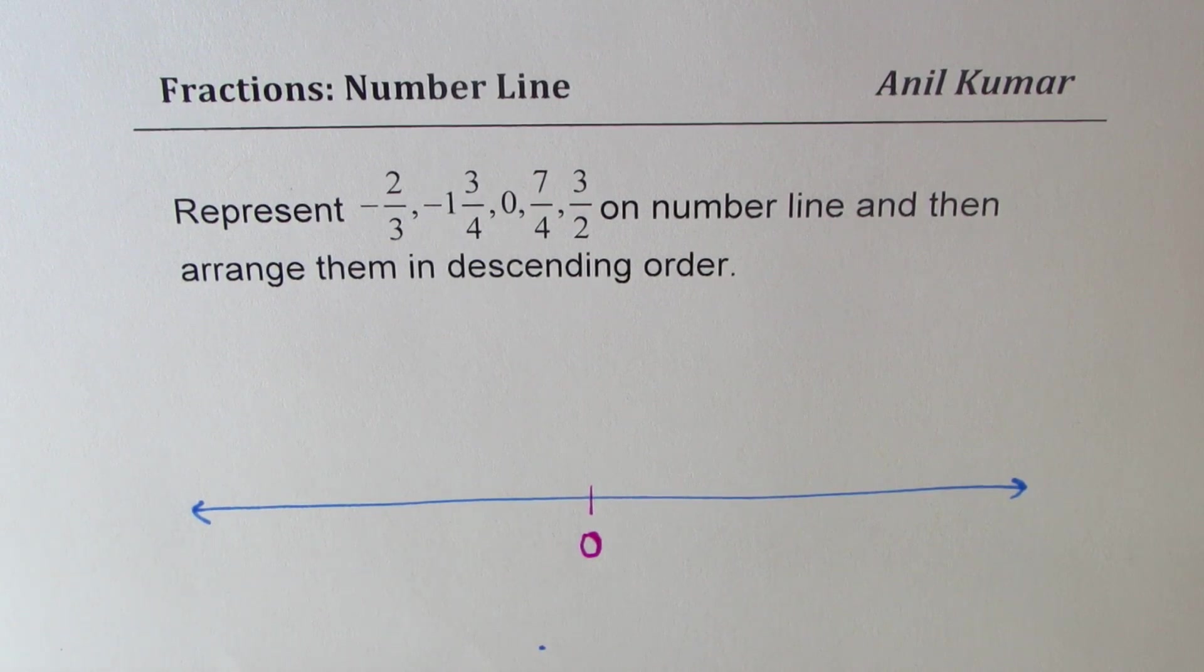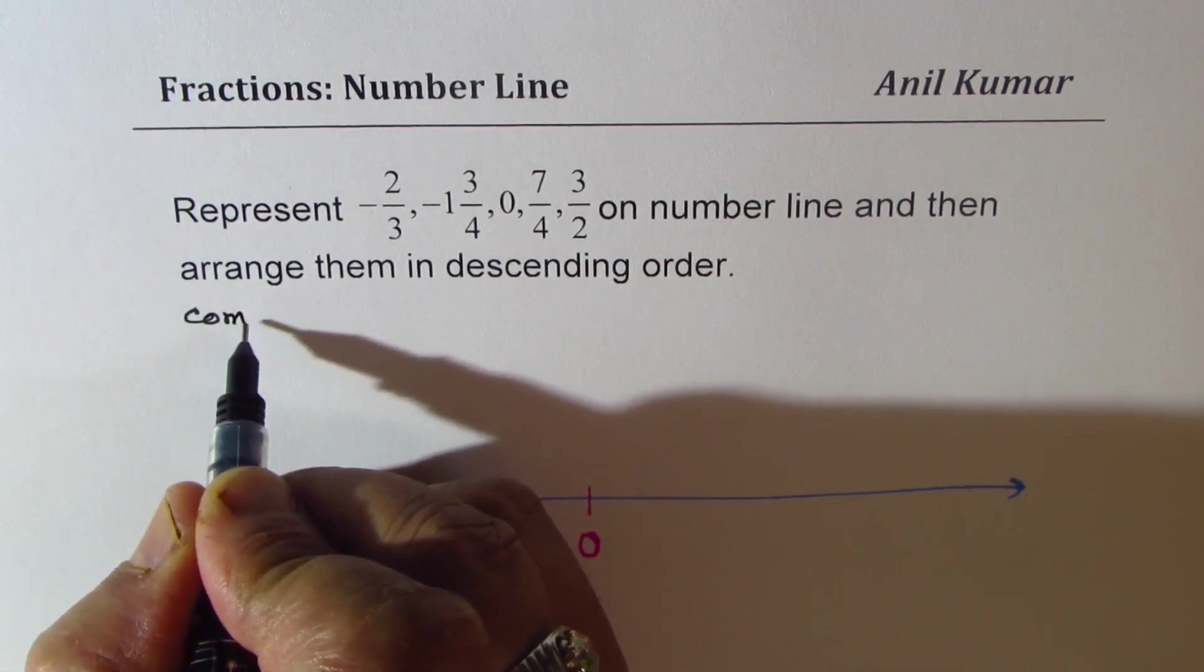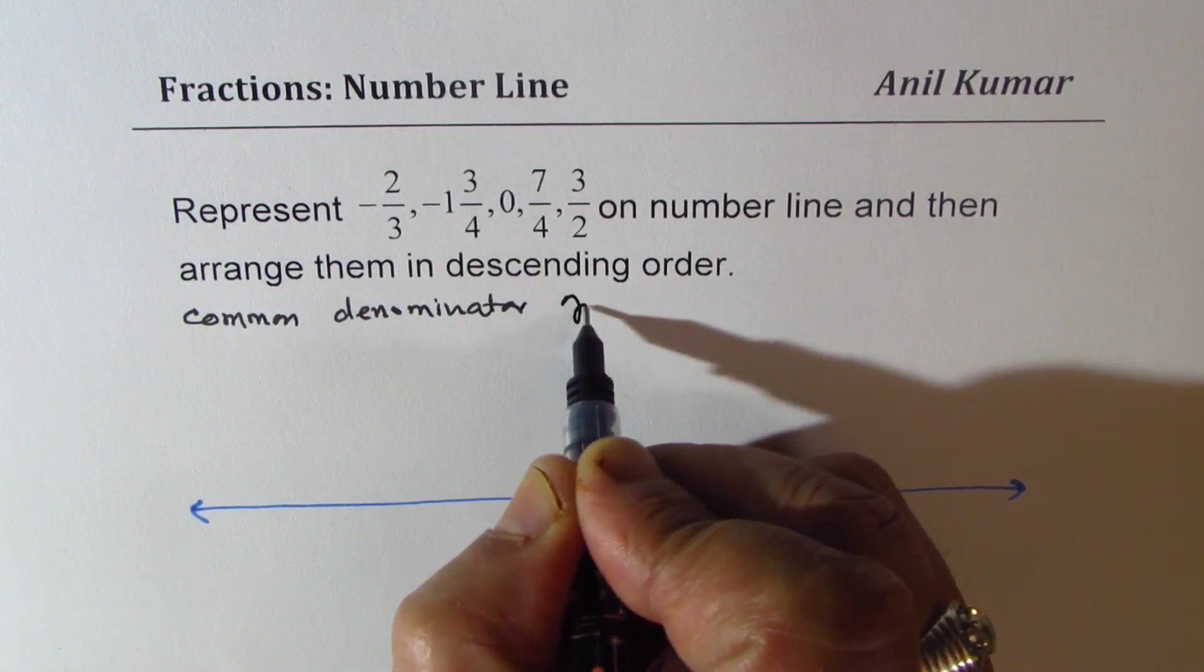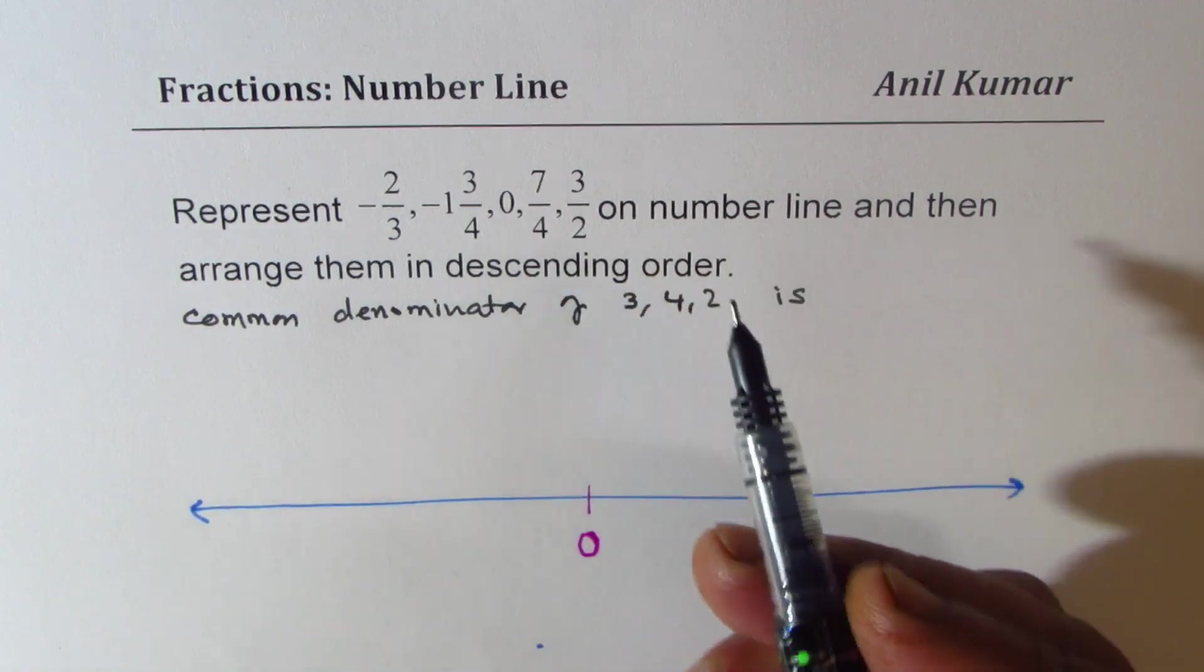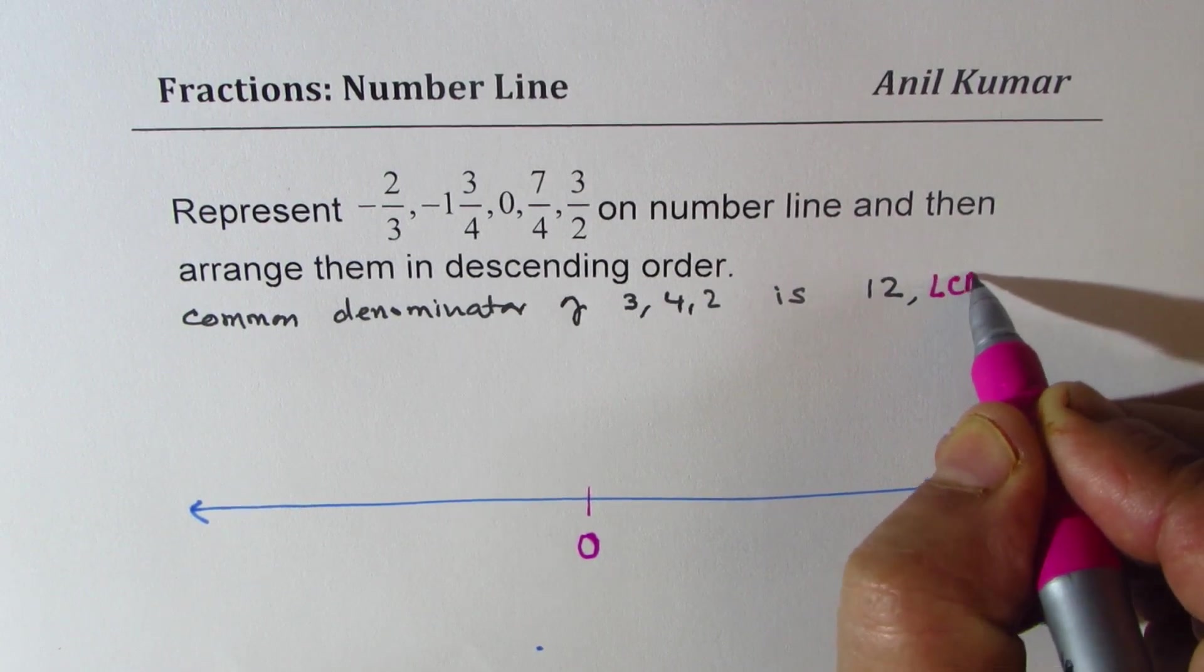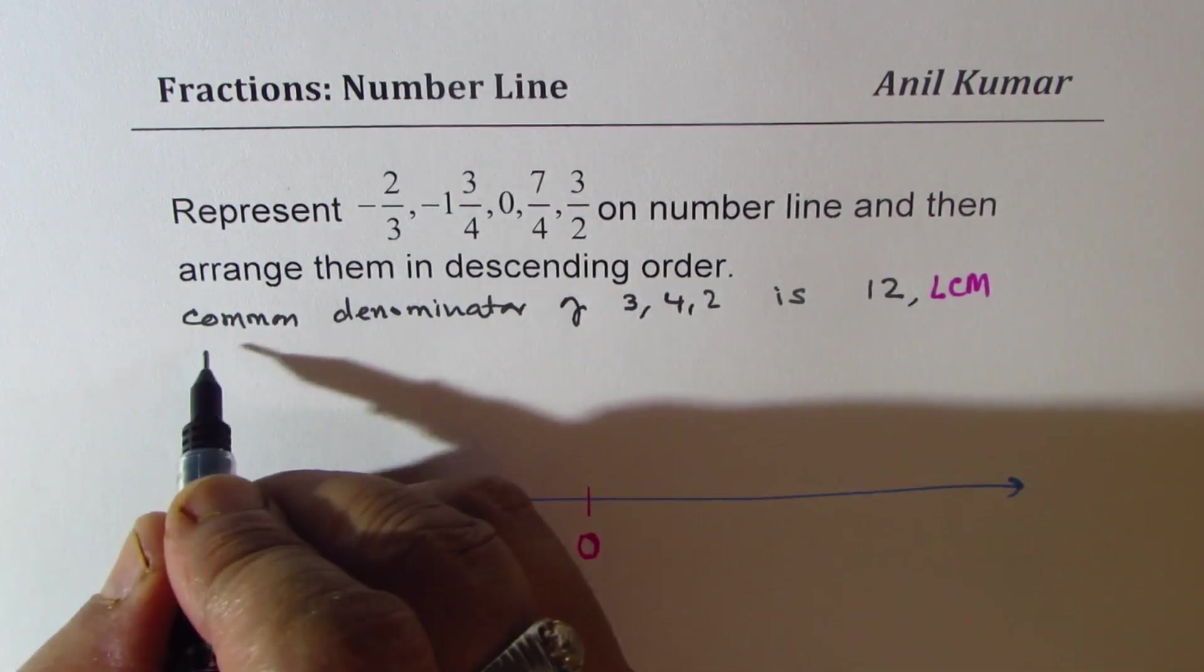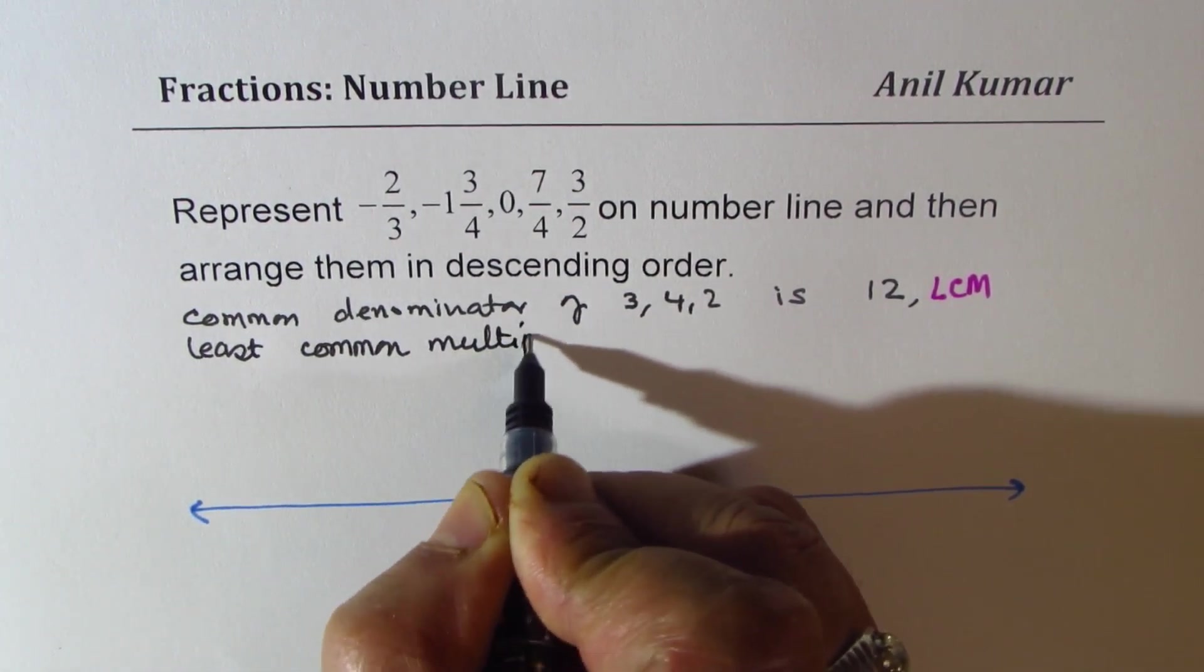The first way which I like you to concentrate on is taking common denominator and then arranging the numbers. Now the denominators are 3, 4, and 2. So the common denominator of numbers 3, 4, and 2 is 12. So that is common denominator. We also call it LCM. Sometimes we also say lowest common denominator or least common multiple.